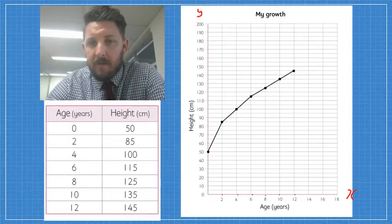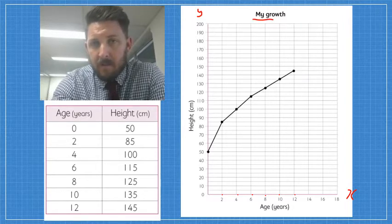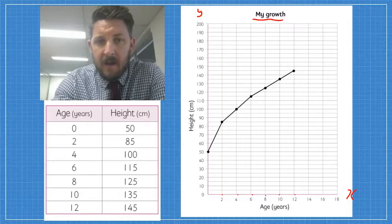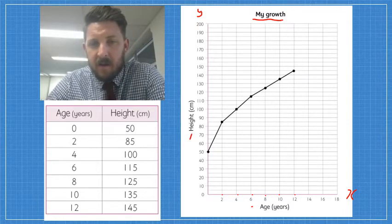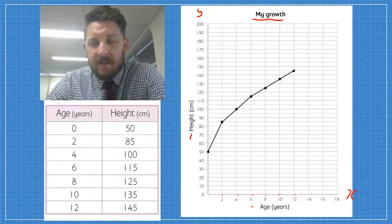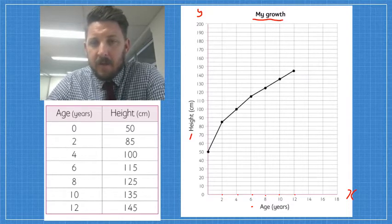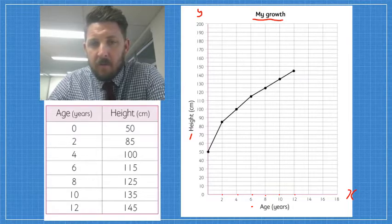I'll be looking for my three titles: my main title at the top, and then x and y-axis titles. The last thing that I'll be looking for is your data plotted using a ruler and accurate.